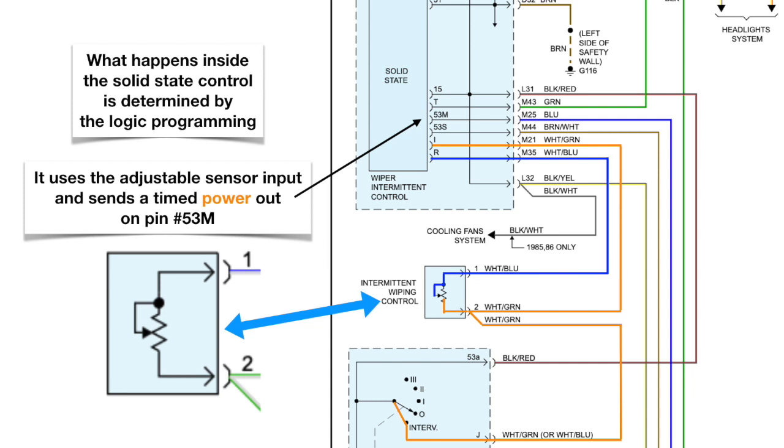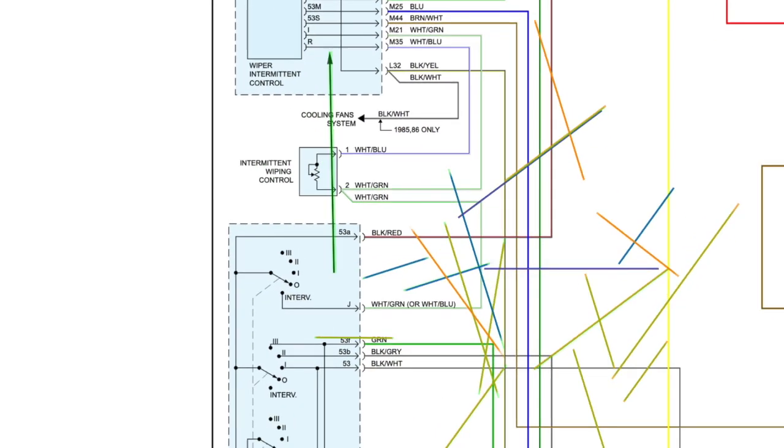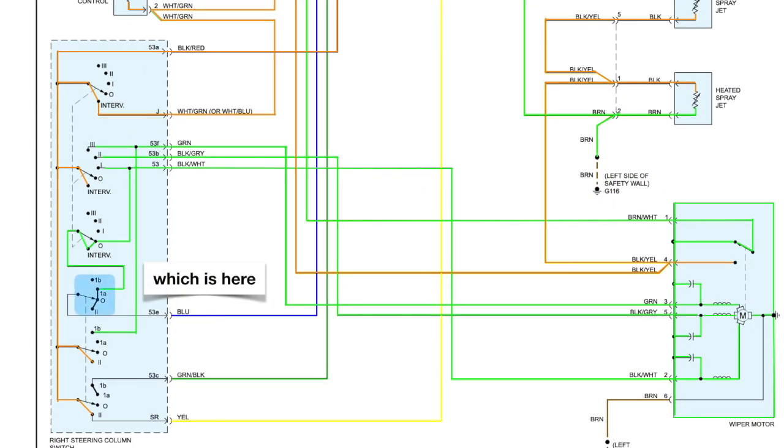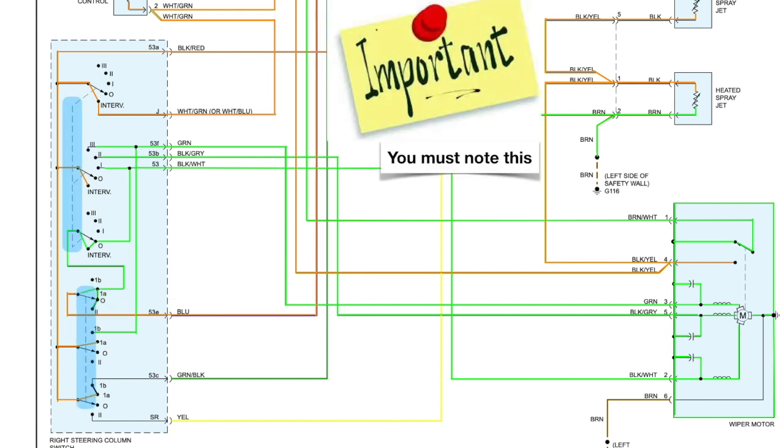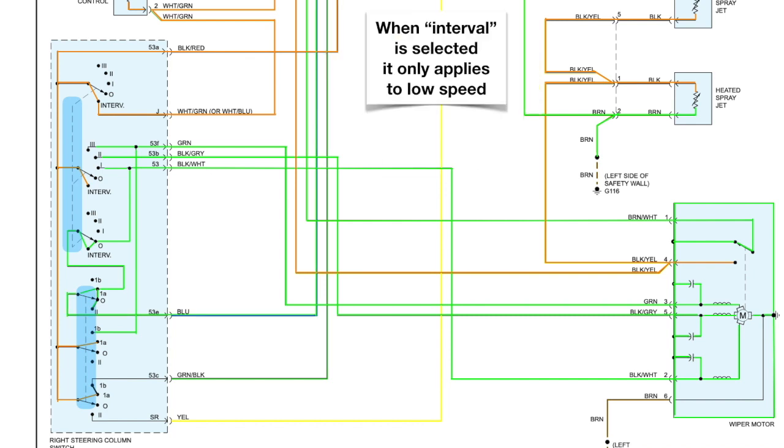You can see that it goes out on 53M and it goes to the interval pin number 1A, which is down here. It's important here, you must note this: when interval is selected, it only applies to low speed.